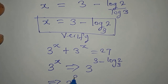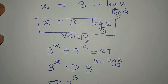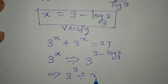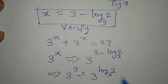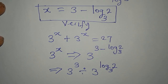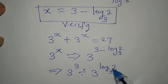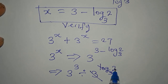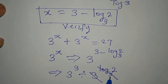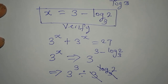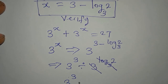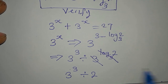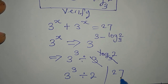This is not multiplication — the subtraction here means we are dividing. So we have 3³ divided by 3 to the power of log₃2. Now, 3 to the power of log₃2: the log base 3 cancels the base 3, leaving just 2. So we have 3 to the power of 3 divided by 2, and 3³ is 27, giving us 27 over 2.